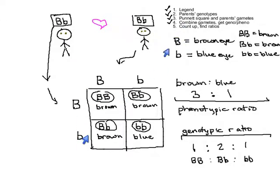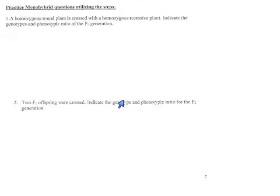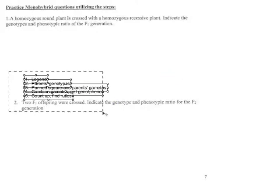Step five is just counting up all the outcomes and seeing how often they happened. In this case, we found brown eyes happened three times, whereas blue eyes only happened once. That gives us one of our ratios. And for genotypes, we get Big B Big B once, Big B Little B twice, and Little B Little B once.